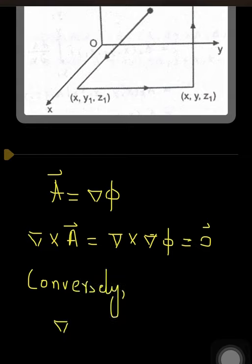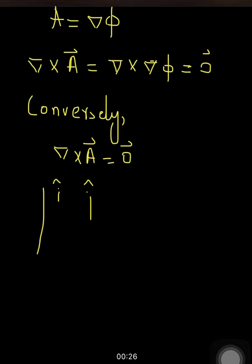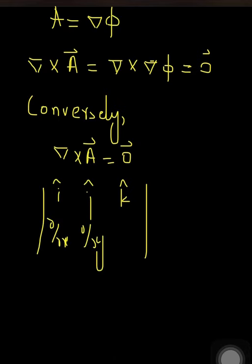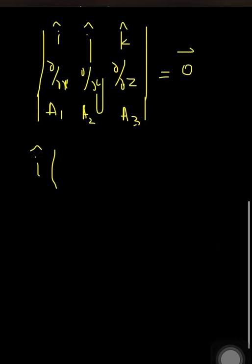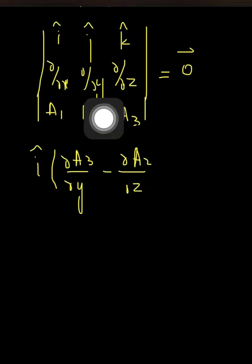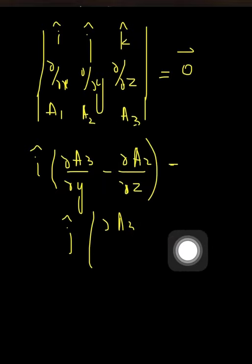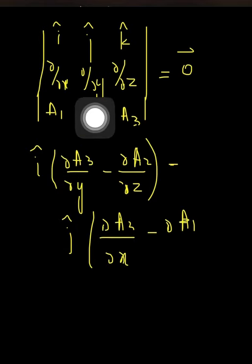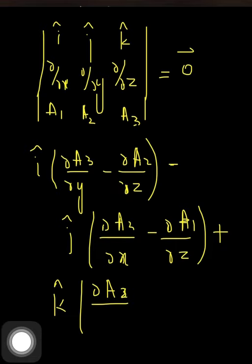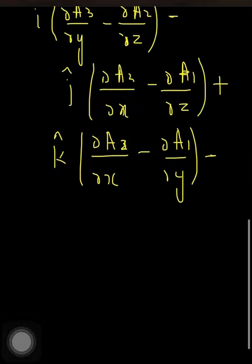Conversely, if del cross A equals the zero vector, then I can write it in determinant form: i, j, k; partial over partial x, partial over partial y, partial over partial z; a1, a2, a3 — all equal to zero. Expanding by cross multiplication: partial a3 over partial y minus partial a2 over partial z, and so on, equals the zero vector, giving zero i plus zero j plus zero k.